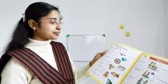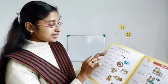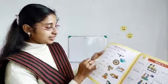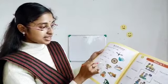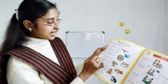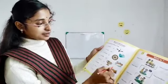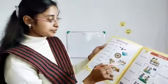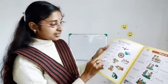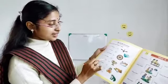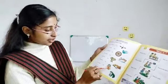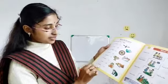This is a car. That is a car. That isn't a car. That is a bird. This is a doll. That is a frog.